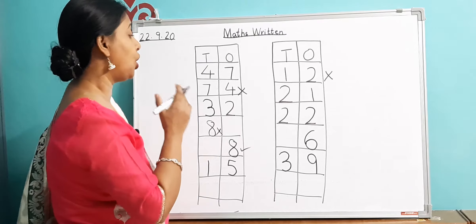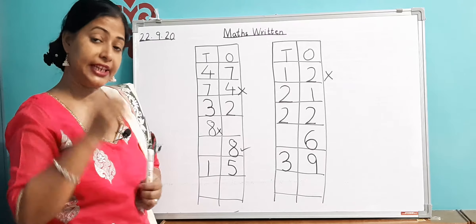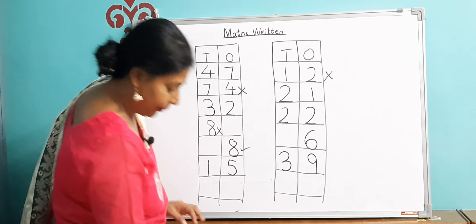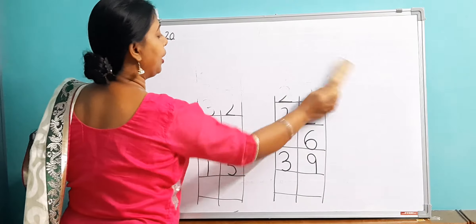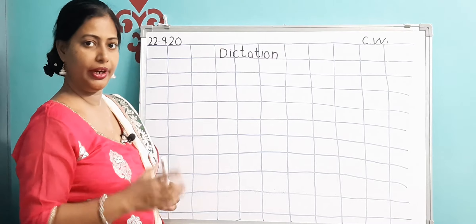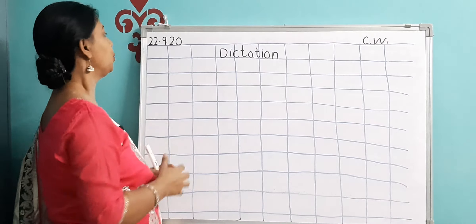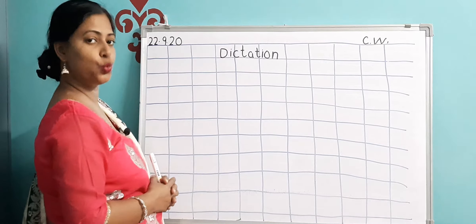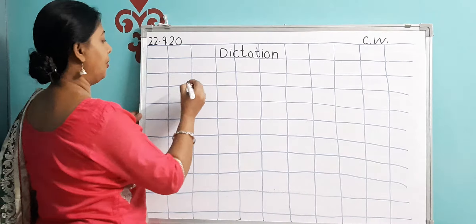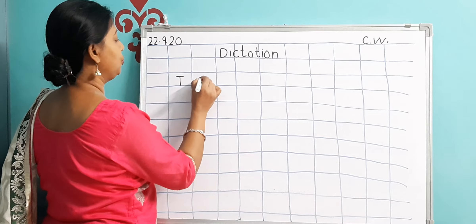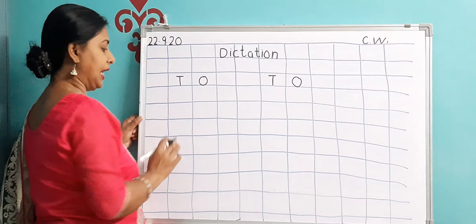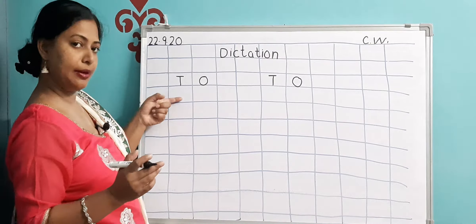This is called dictation. In this dictation, I will say the number and you have to listen very carefully which number ma'am is saying, then write it in the column carefully. Take out your copy. I have drawn the lines — I hope you are ready with your copies. Today is 22.9.20. I have already written the heading: Dictation. You can ask your parents to write it. The columns are T O, T O — leave two squares and then again T O and T.